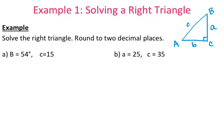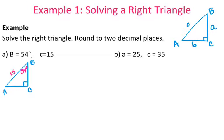For part A, I'm going to draw that same triangle and label things. I have A, B, and C. I know that angle B is 54 degrees, so I can label that as 54 degrees. I know side c is 15, so I can label that side as 15. What I'm missing is angle A, side a, and side b.